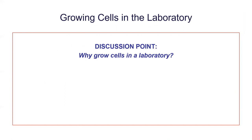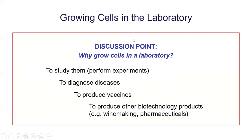Part B of topic three covers a few other things around laboratory methods — one is about growing things in the lab, which you've seen a little bit with bacteria using agar plates and test tubes. First: why would we want to grow cells in a laboratory? Obviously one reason is for experiments or learning exercises. We also do this to diagnose diseases.